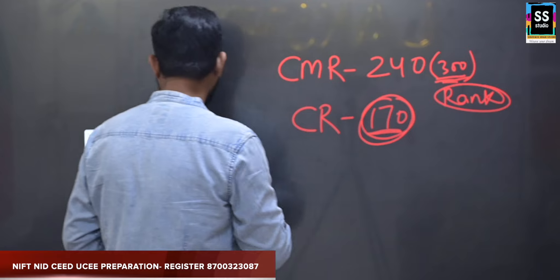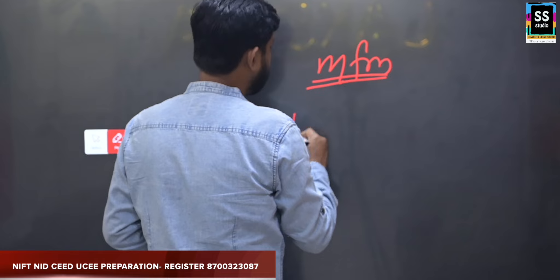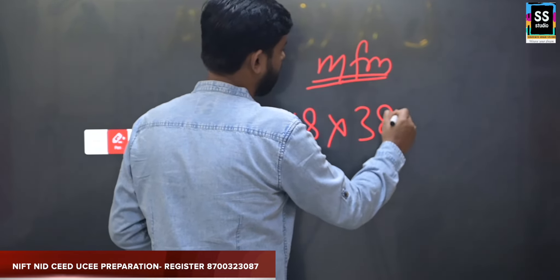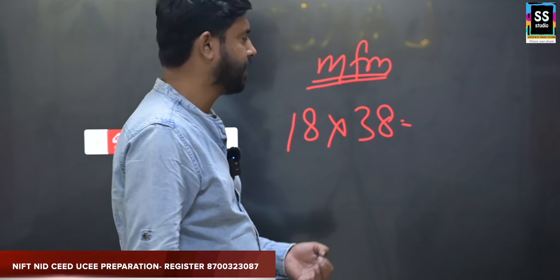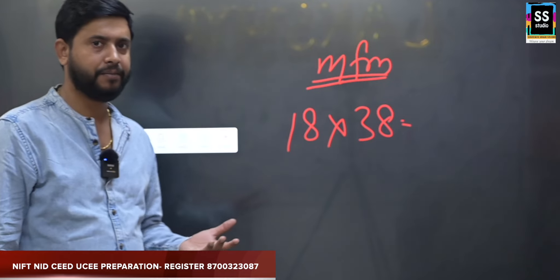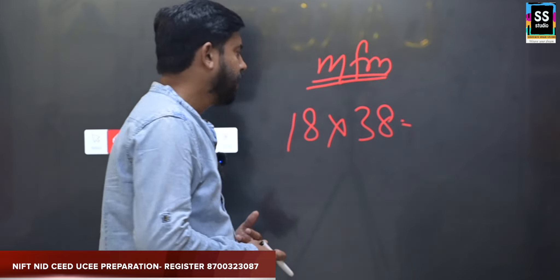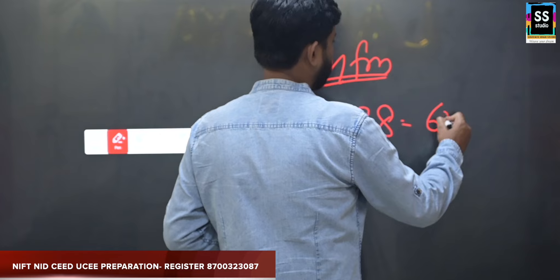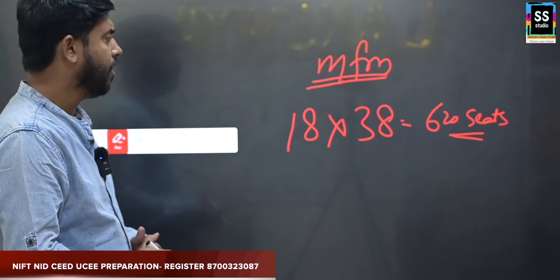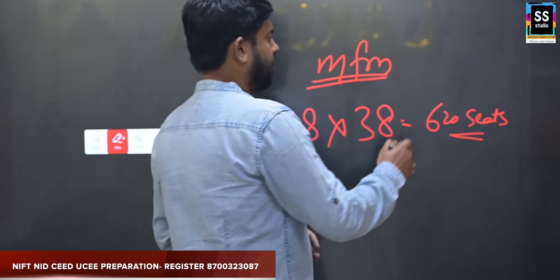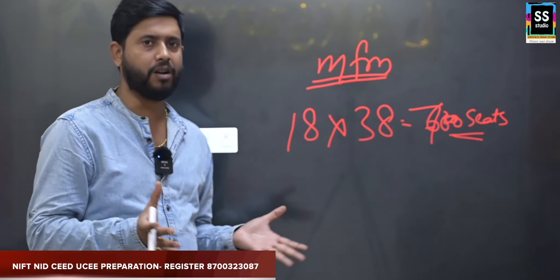Same goes with MFM. In MFM there are 18 campuses. Taking an average of 38 seats per campus — though some campuses have only 34 seats — that comes to around 620 seats, so approximately 700 seats in total across all categories: SC, ST, OBC, EWS, PWD, and general category.